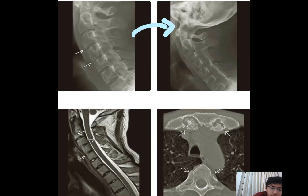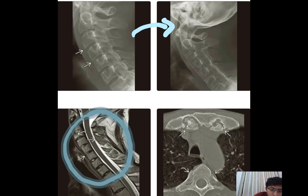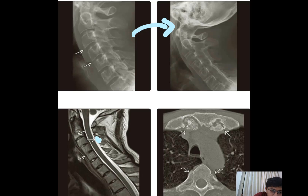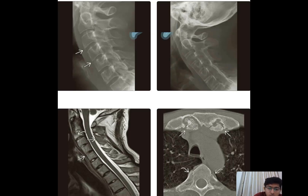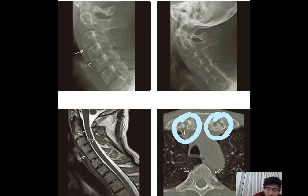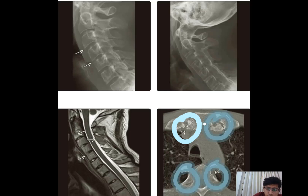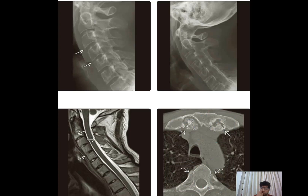MRI of the same patient does not show as many changes in the vertebral bodies, though fusion of the spinous process and some inflammatory changes are visible, but not as severe as on X-ray. On CT, we can see erosive changes at the sternoclavicular joint and fusion at the costovertebral junction, which is one of the most common sites of involvement in ankylosing spondylitis.